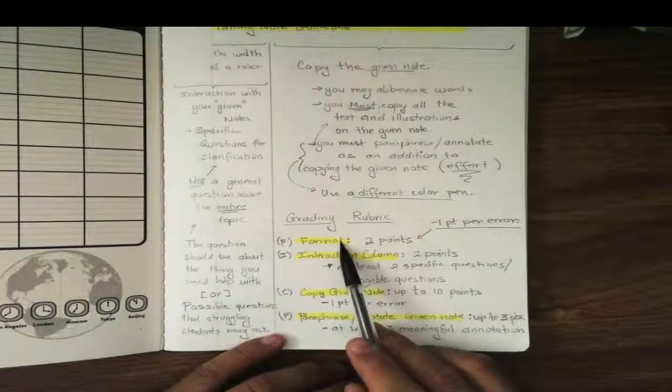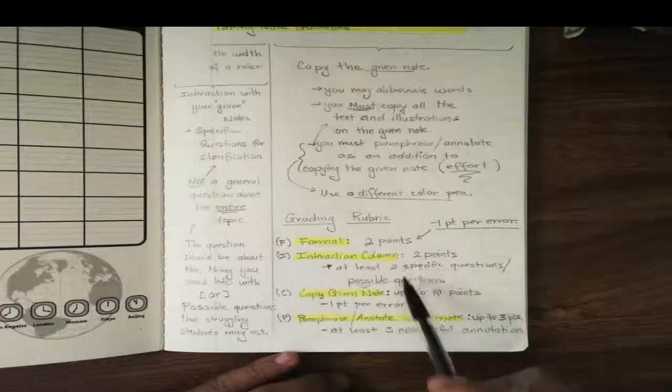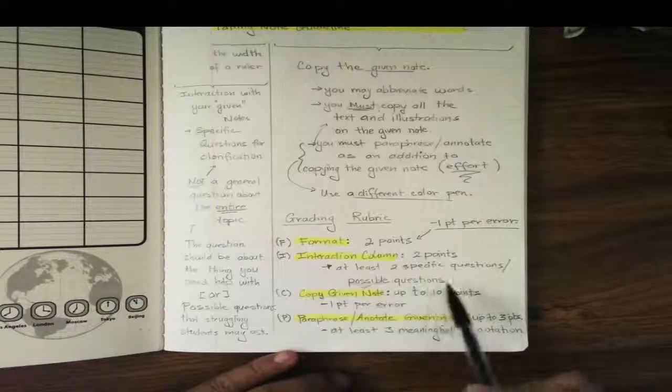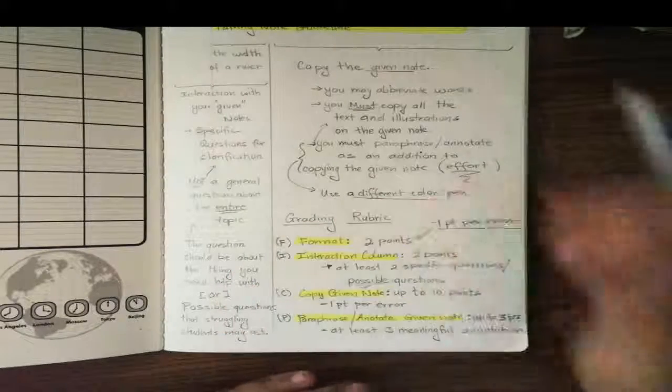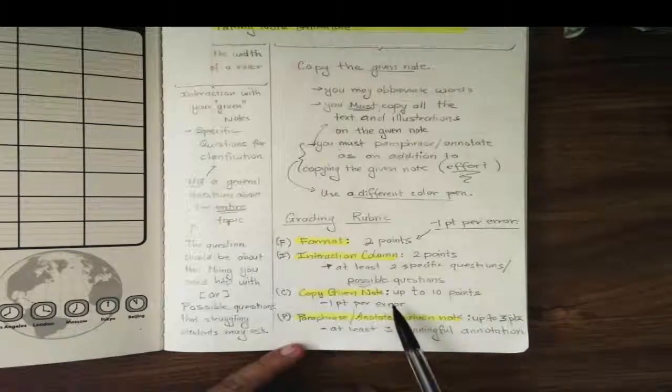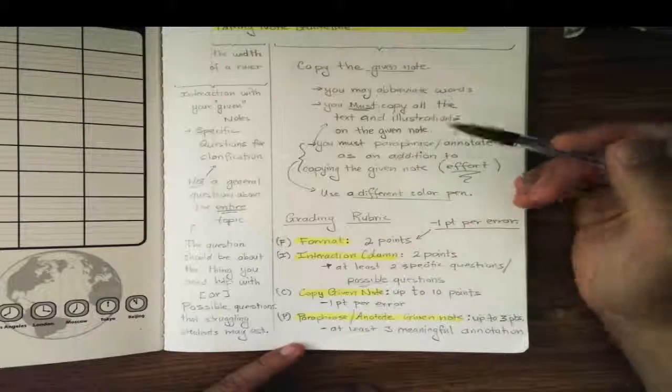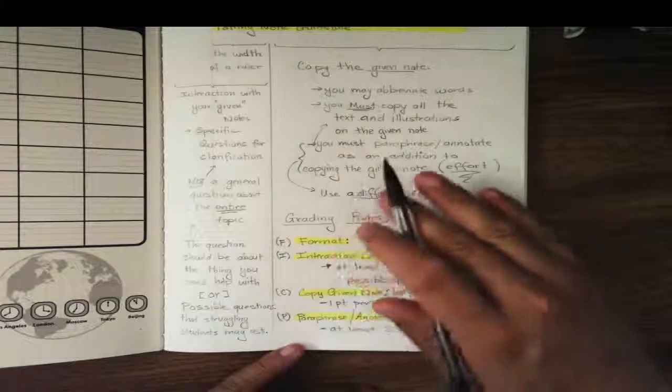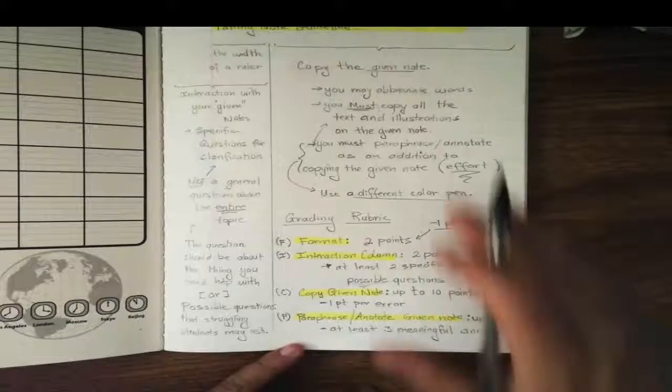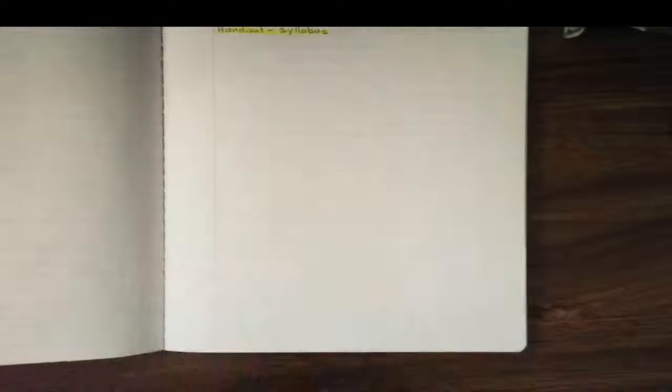In terms of grading, this is how the points are divided. We have the format, two points, minus points for errors. So for the interaction column, basically you need at least two specific questions or possible questions that struggling students will generate. So I'm looking for effort and meaningful content. And then copy the given notes. In most cases, the amount of given notes will not be the same. So the more notes is given to you, the more points it's worth. And lastly we have paraphrase and annotate, which will be indicated by a different color. To get full credit, you need at least three meaningful annotations. So look through your given notes, so that way I can see that you have interacted with the notes.